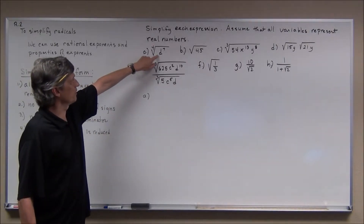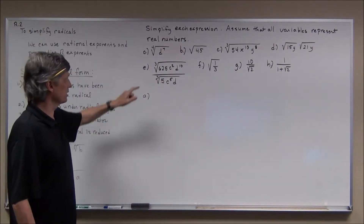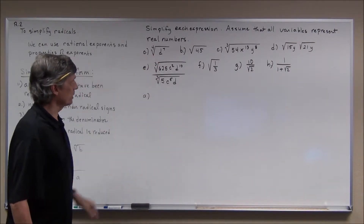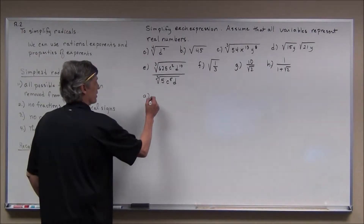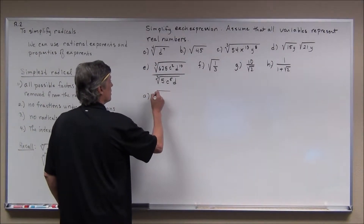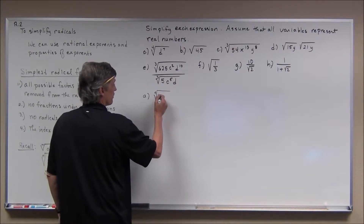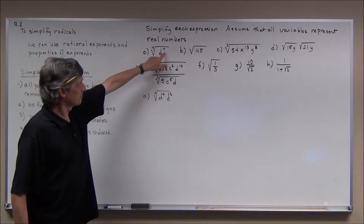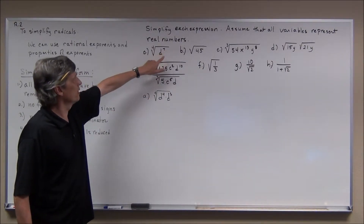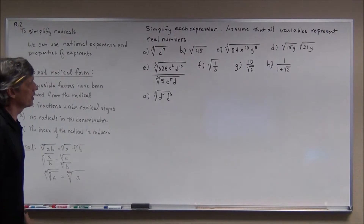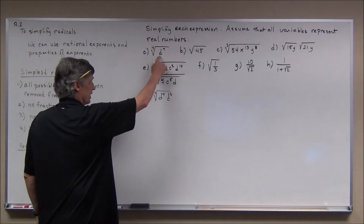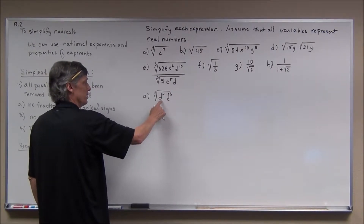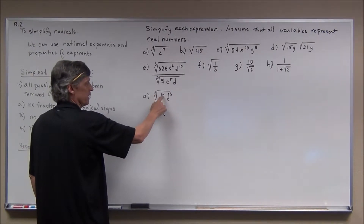Maybe D is a negative number — D to the seventh then would be negative. But because we're assuming this expression is defined, we have to assume D is a positive number. Now if I want to take the fourth root of D to the seventh, I'm going to think of D to the seventh as D to the fourth times D to the third, because the exponent in my radicand is greater than the index of my radical. That means this has a factor that's a perfect fourth power: D to the fourth.